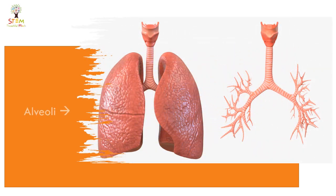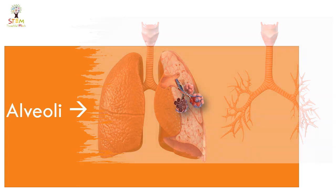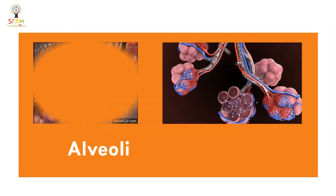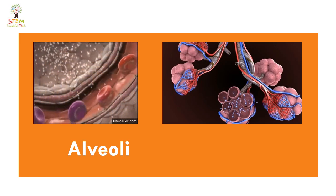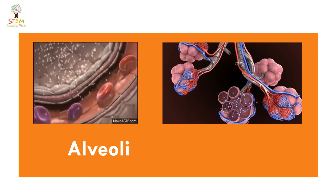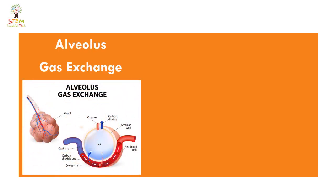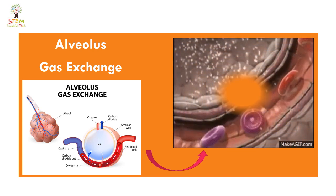The bronchus divides into bronchioles and into tiny air sacs called alveoli. Alveoli have thin walls and are surrounded by a network of blood capillaries where the exchange of gases takes place. What is the function of the two lungs? Gas exchange takes place in them, especially in the alveoli.